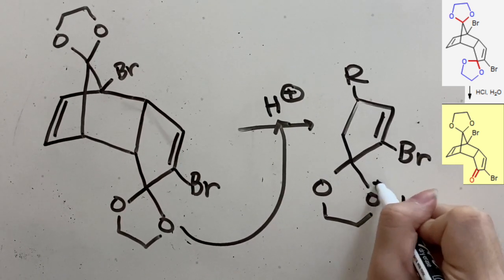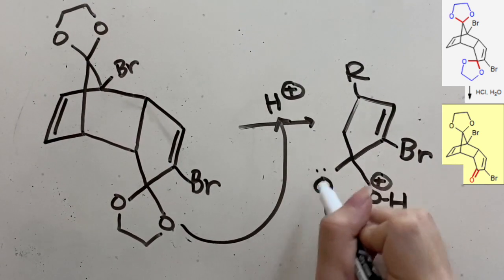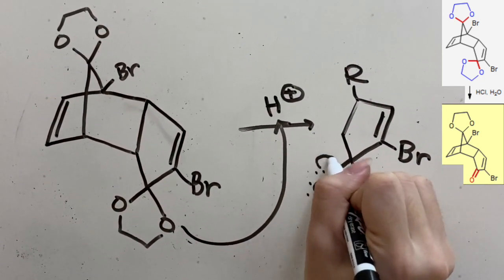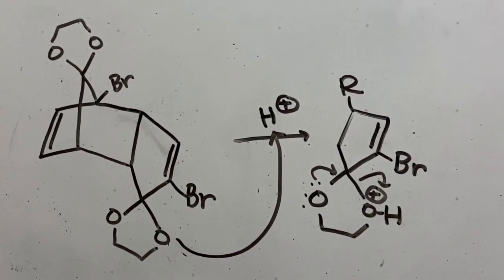So now we have a plus charge on the oxygen. So this other oxygen will form a double bond using its electron pair and break this carbon-oxygen bond here.